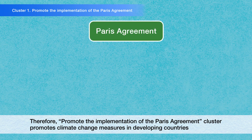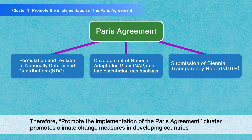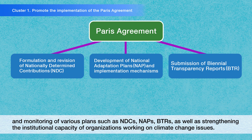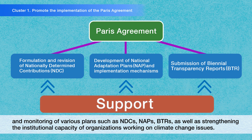Therefore, the Promote the Implementation of the Paris Agreement cluster promotes climate change measures in developing countries through capacity development for the formulation, implementation, and monitoring of various plans, such as NDCs, NAPs, and BTRs, as well as strengthening the institutional capacity of organisations working on climate change issues.